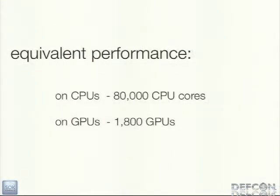Looking at equivalent performance via benchmarks on CPUs and GPUs: to do it in under 24 hours would take about 80,000 CPU cores, or about 1,800 GPUs. Just for an idea of scale — your machine versus a data center full of GPUs or CPUs.